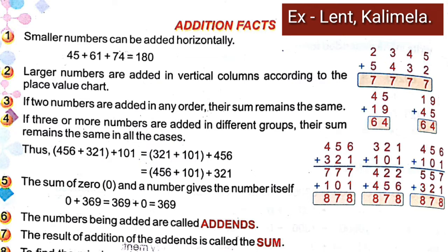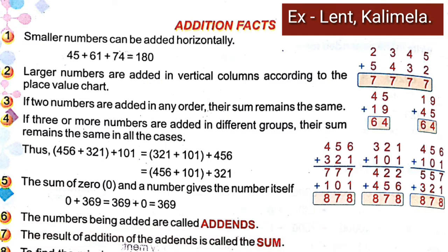Fact six: the numbers being added are called addends. For example, in five plus seven equals twelve, five and seven are the addends. Fact seven: the result of the addition of the addends is called the sum. So the numbers which are added are known as addends, and the result of the addition is known as the sum.